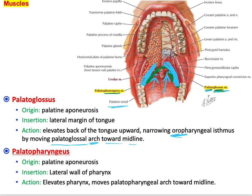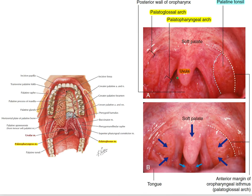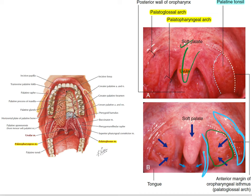Here is a lateral view showing the soft palate with the uvula. The palatine tonsil is clearly visible, framed by the palatoglossal arch anteriorly and the palatopharyngeal arch posteriorly, with the palatine tonsil in between.